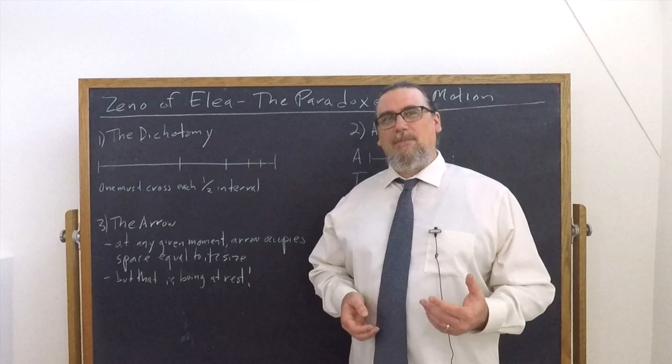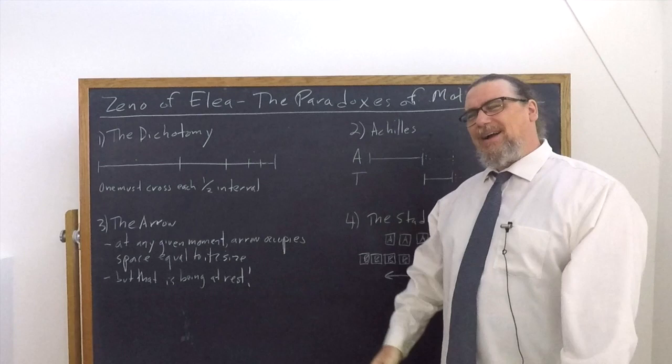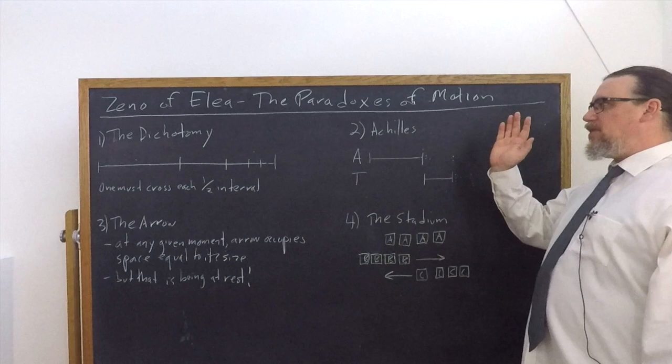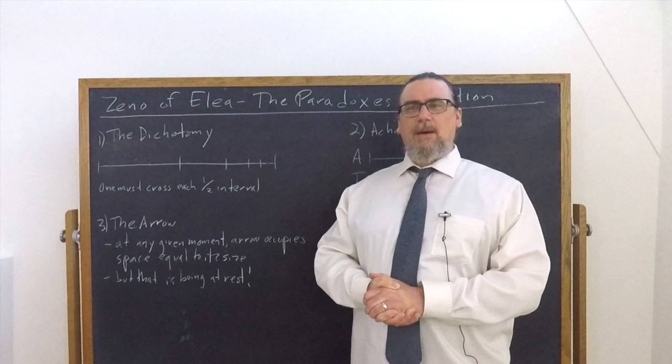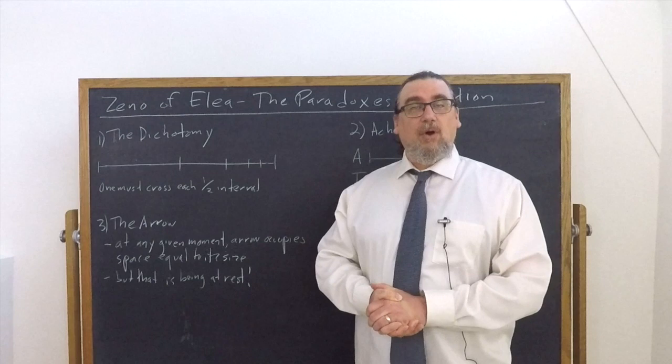So there's four of them: the dichotomy it's usually called, the Achilles, sometimes called Achilles and the tortoise, the arrow and the stadium. All of them are intended to show that if you assume that motion exists, we're going to be led into some sort of problem. So the conclusion should be that motion doesn't really exist. So the dichotomy is fairly straightforward.